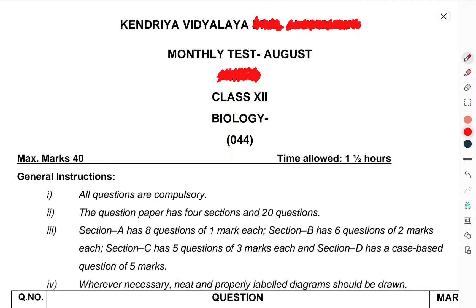Today we will talk about Monthly Test, Period Test or Assessment Test, Class 12 Biology. Maximum marks is 40.